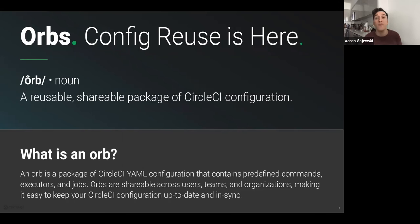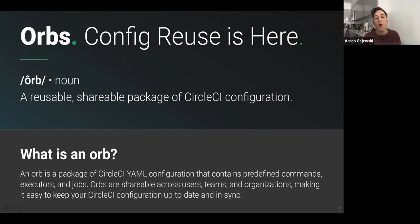A great example of the power of orbs would be if you had a standardized deployment process. You can package that process into an orb, and then all of your individual projects could reference that same deployment process. That way, each project does not have to maintain its own deployment configuration, and if you need to make an update, you only have to update it in one place.